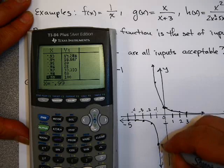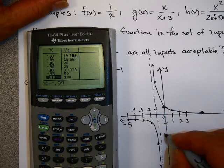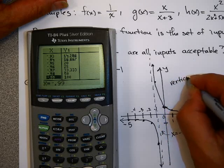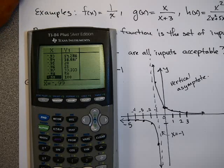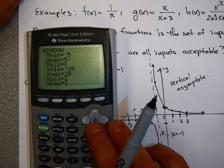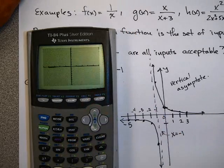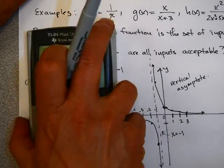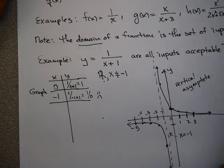At negative 1, this function has no value, but it seems to approach the vertical line x equals negative 1. That line is called a vertical asymptote — not terribly important right now, but it will be useful later. Going back to y equals, I'll set a window from minus 5 to 5 for x and minus 20 to 20 for y, counting by 2, and hit graph. That does look like my function — rational functions often have these asymptotes, which we'll investigate further later.